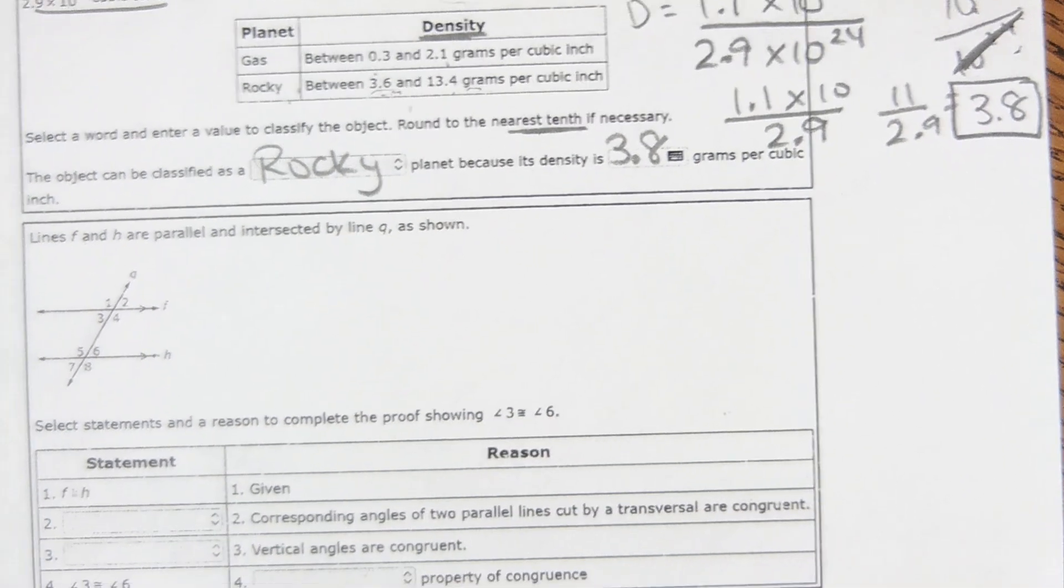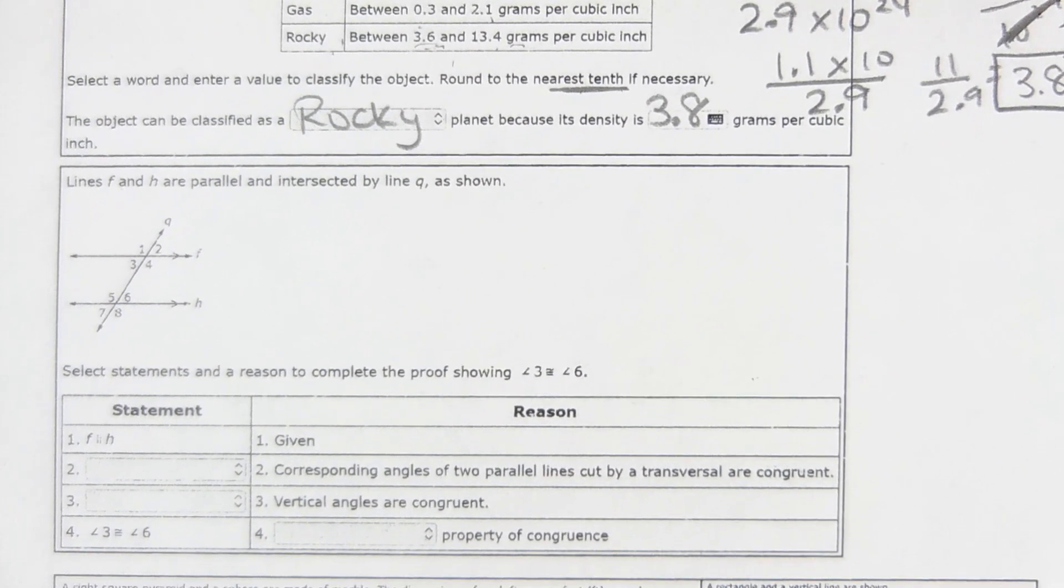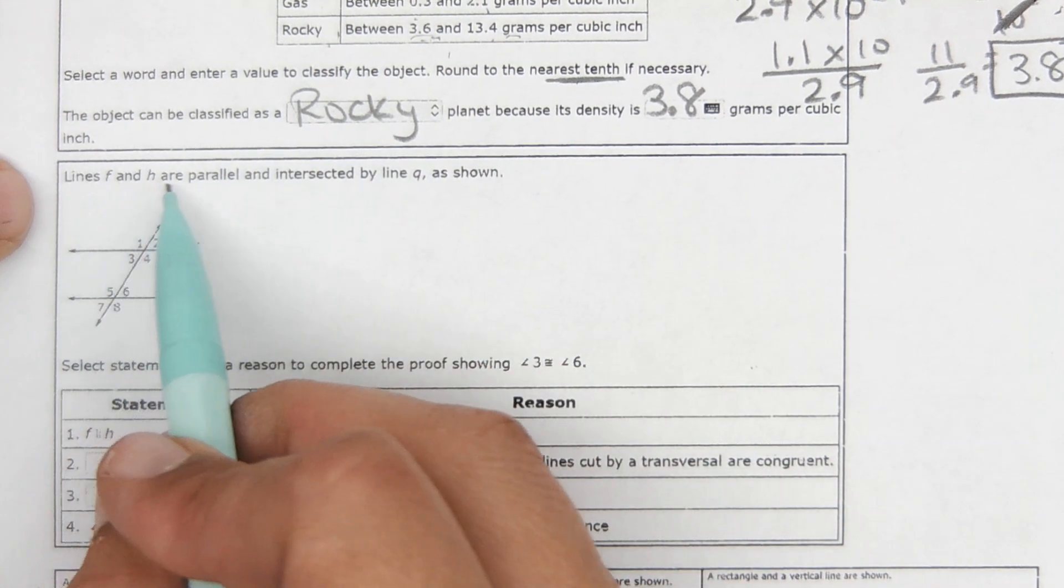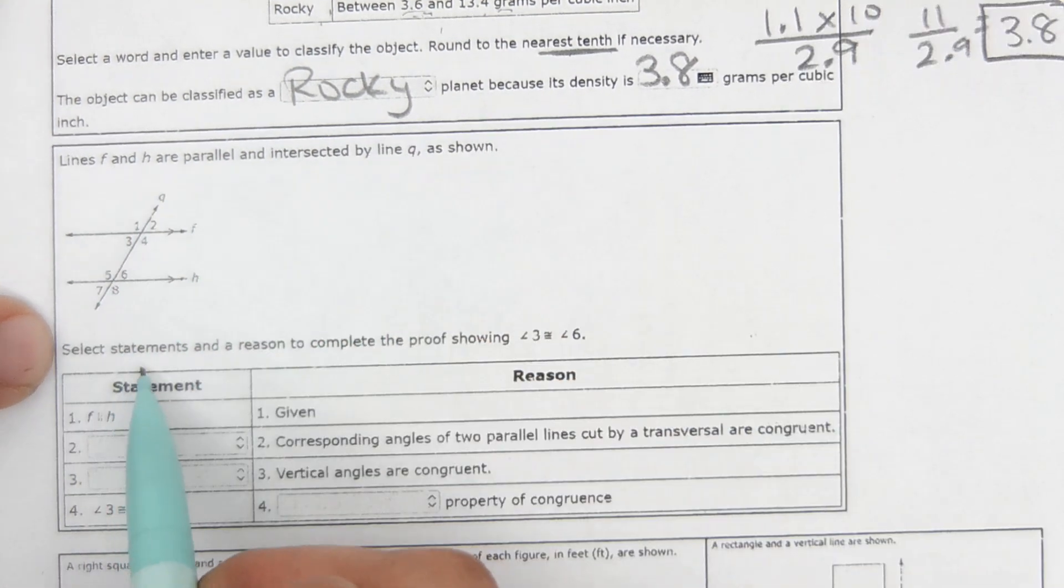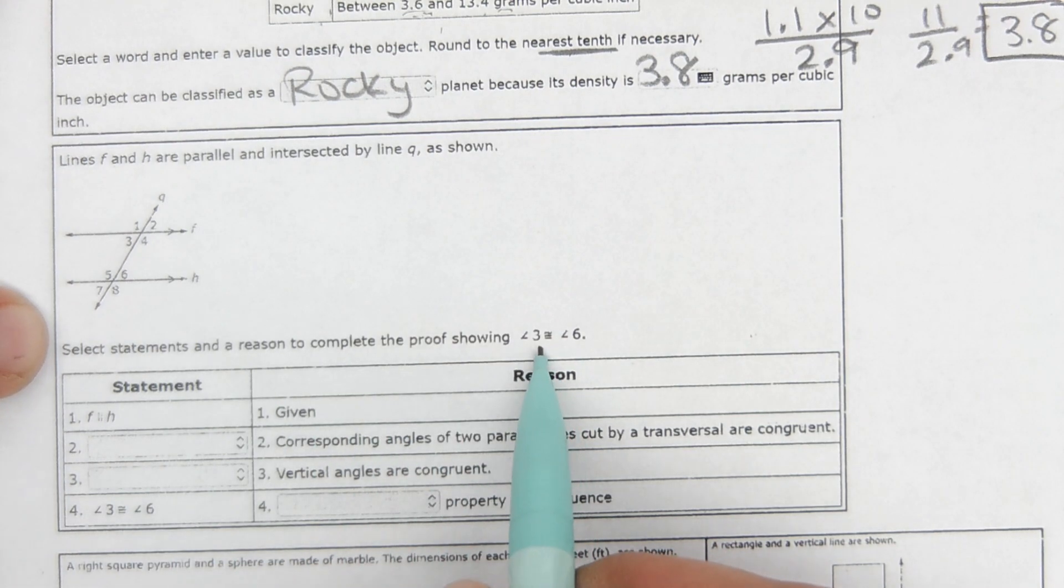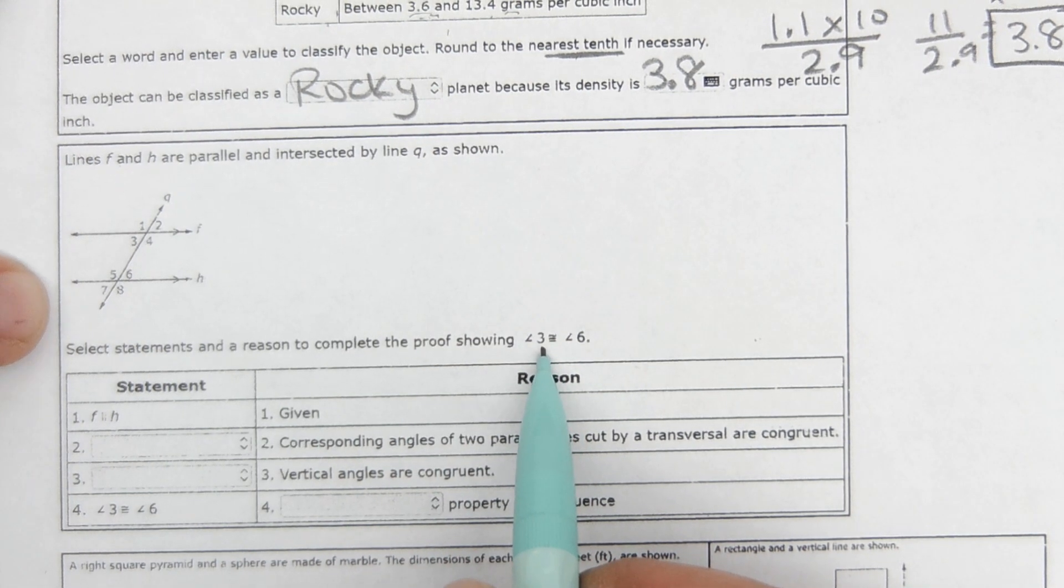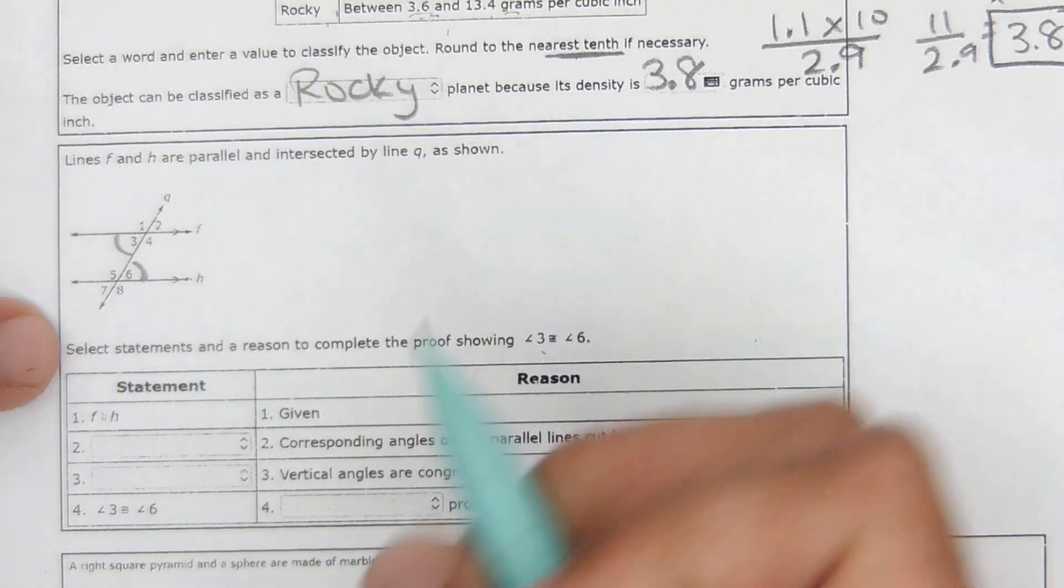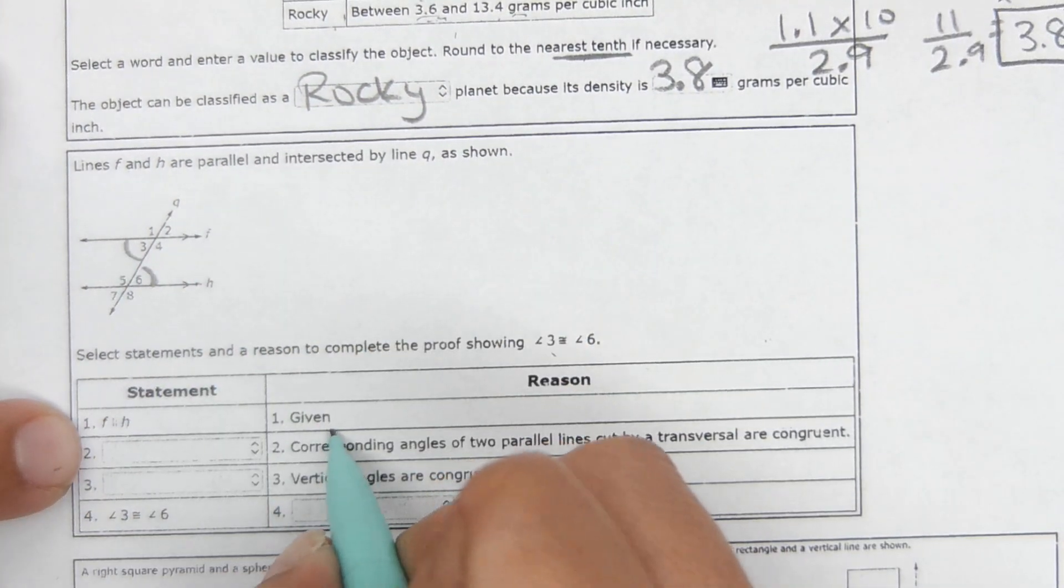Okay, then this one is a proof, but don't be scared, it's actually pretty simple. It says lines F and H are parallel, select the statements and a reason to complete the proof shown, showing that 3 is congruent to 6. So we're trying to prove 3 is congruent to 6. It says F and H are parallel, that's given.